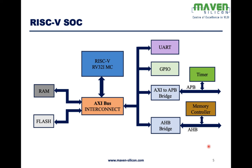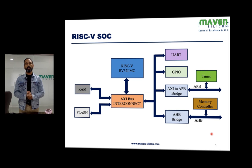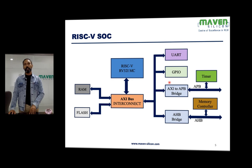We have seen basically how we create a complex electronic system like a smartphone using system on chip. Here I would like to show you how we build such SOCs using processors like the RISC-V processor. In this case it's a simple embedded systems microcontroller, so we use a RISC-V RV32I microcontroller. This processor IP is connected with other hardware IPs and interface IPs through an on-chip bus. In this case it's an AXI bus, and we also need some bridges to connect the IPs which are based on other protocols.